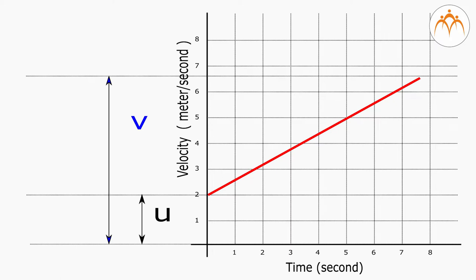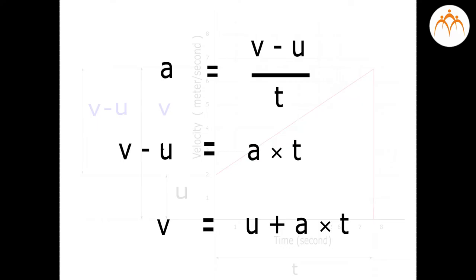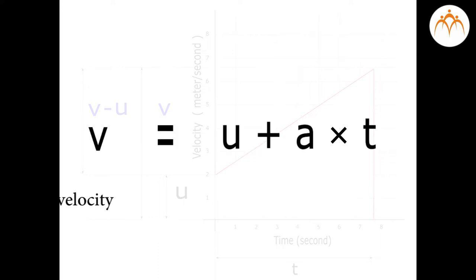U is the initial velocity of the car. V is the final velocity of the car. Change in velocity is V minus U. This change occurred in time t. So, slope of the line can be defined as change in the velocity divided by time. Rearranging the equation gives you the first equation of motion: V is equal to U plus AT. Final velocity is equal to initial velocity plus acceleration into time.